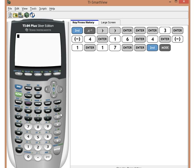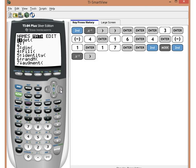2nd mode quit. Hit second matrix once again. Scroll right to math.